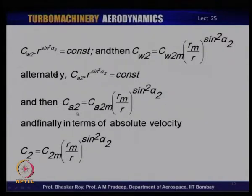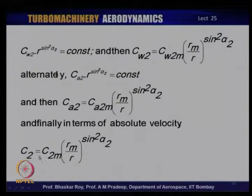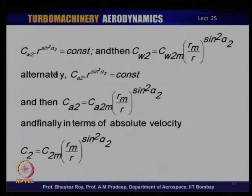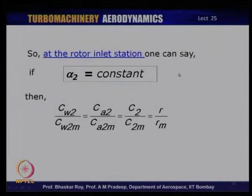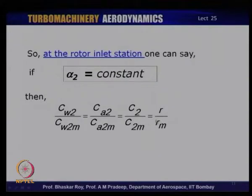This is a very different equation from the one for free vortex law. We get C_W2 related to the mean radius value as C_W2m · (r_m/r)^(sin²α₂). The variation of parameters now looks quite different from free vortex design. The axial velocity variation falls in line: C_A2 · r^(sin²α₂) = constant. At the rotor inlet with alpha_2 constant, C_W2/C_W2m = C_A2/C_A2m = C_2/C_2m = (r/r_m)^(sin²α₂), so all velocity components are directly related to the radius ratio.